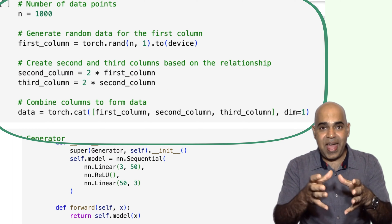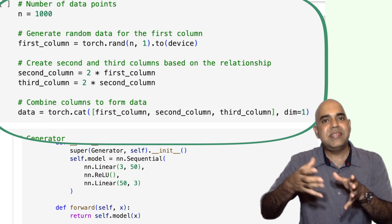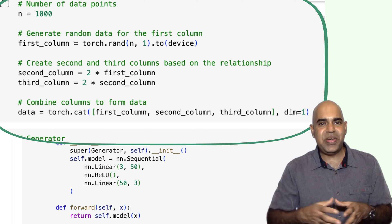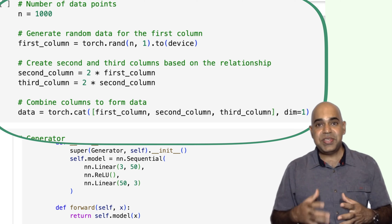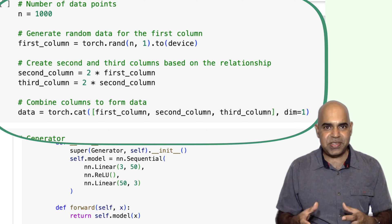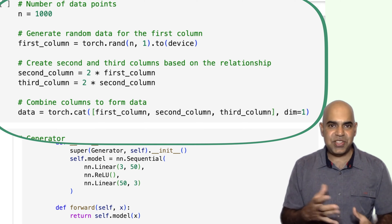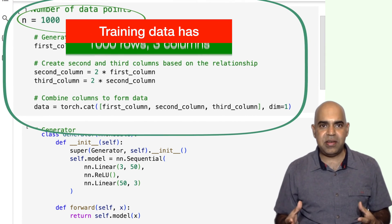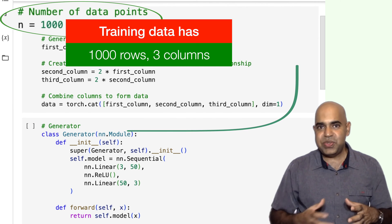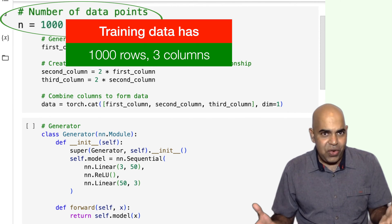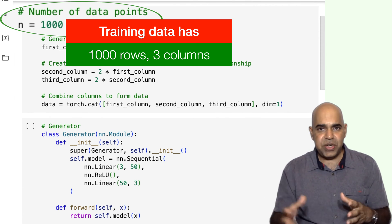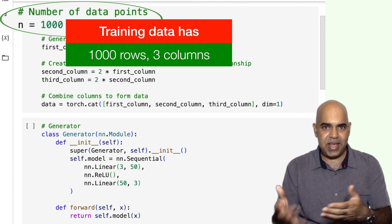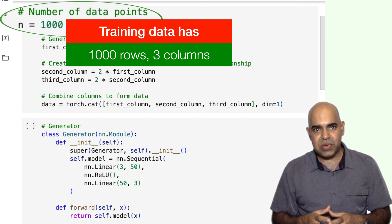The third column is what we have in the second column multiplied by 2. That means if the first feature of a row of the data has 0.5, then the second feature will be 1.0, and the third feature will be 2.0. That is, the second feature is twice as much as the first feature. The third feature is twice as much as the second feature.